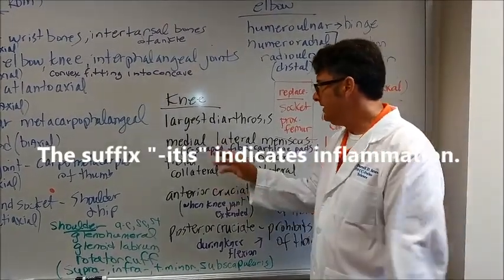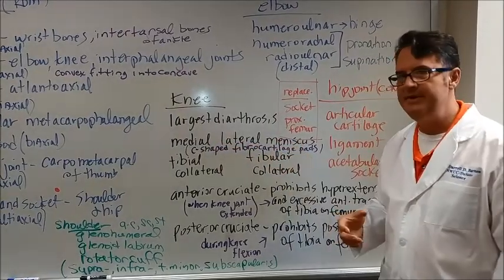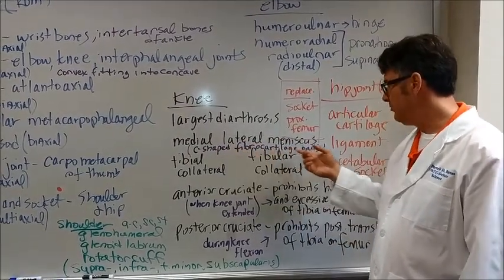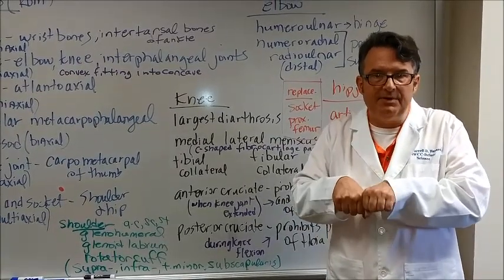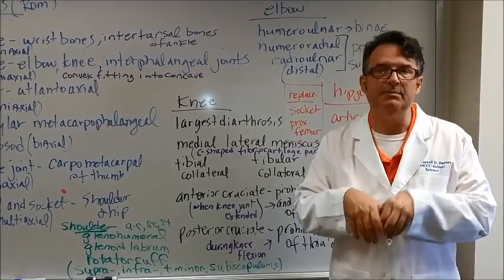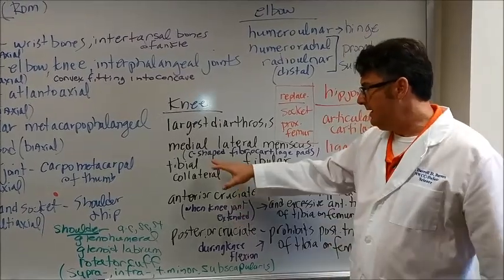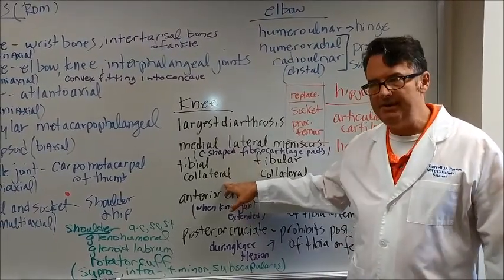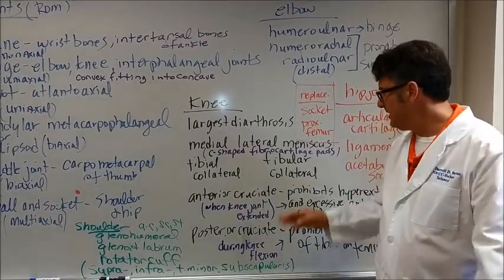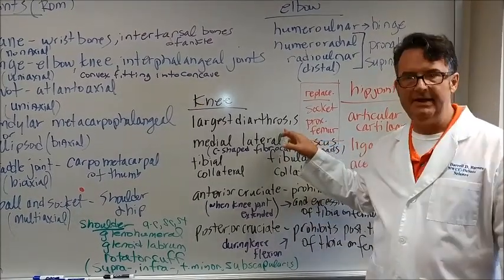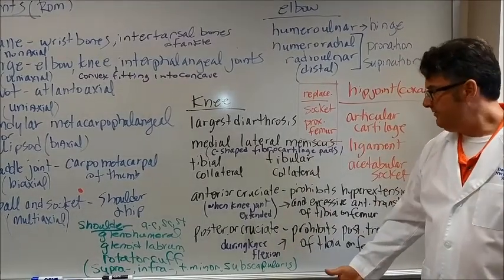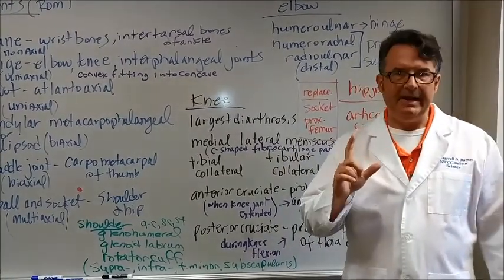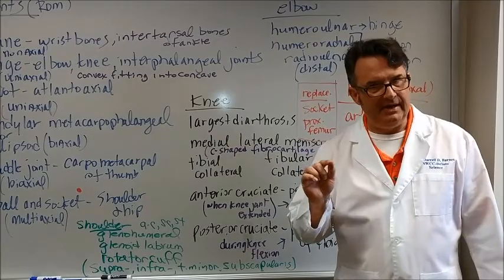When we look at the knee, there is a medial and there's a lateral meniscus. There is a C-shaped fibrocartilaginous pad that kind of gives the ends of the femur, the humps, the condyles, a place to track. There is a tibial collateral ligament that goes down the medial aspect, and then there's a fibular collateral ligament that goes down the lateral aspect connecting the femur to the fibula.